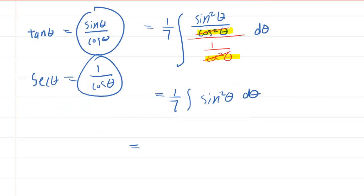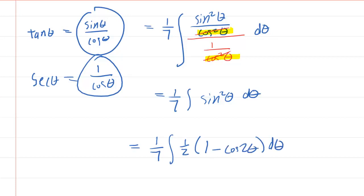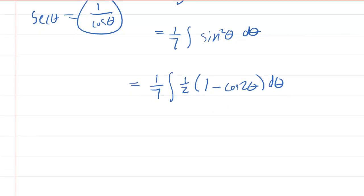To integrate sine squared, we have to rely on another trigonometric identity. Sine squared equals one-half times (1 minus cosine of 2 theta). We factor out the one-half to the outside and multiply one-seventh by one-half to get one-fourteenth. This gives us one-fourteenth times the integral of (1 minus cosine of 2 theta) d theta.